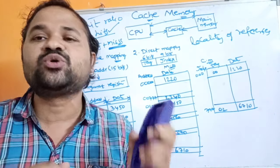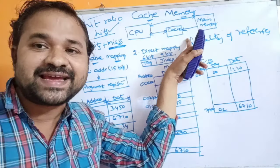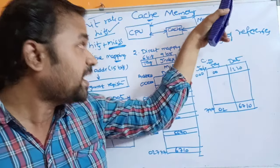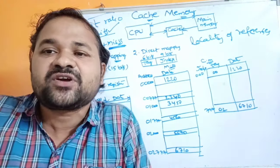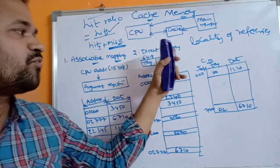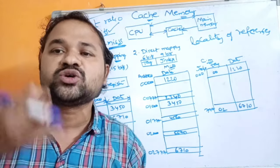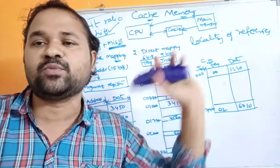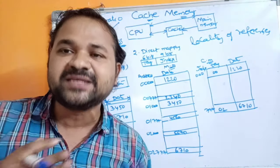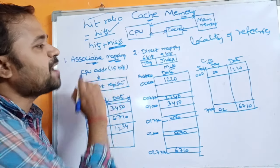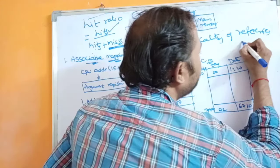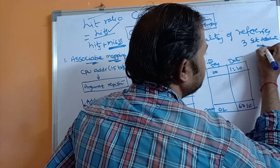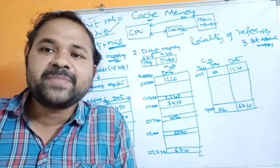If the word is not present in cache, the corresponding word must be transferred from main memory to cache memory. This transfer is done with the help of mapping. Mapping is a process by which a word is transferred from main memory to cache memory. There are three types of mappings: associative mapping, direct mapping, and set associative mapping.